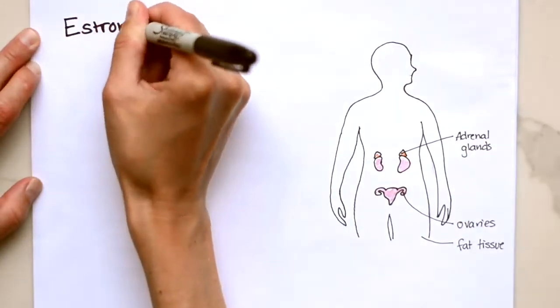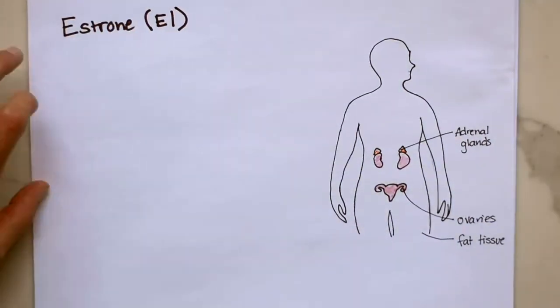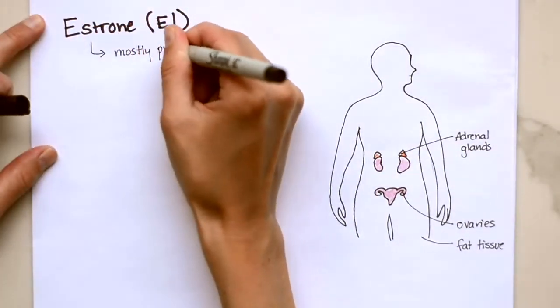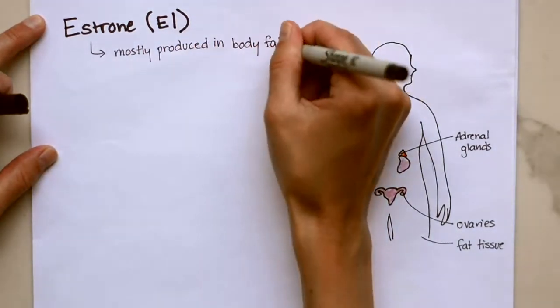Estrone, which is E1. It is considered to be a weak estrogen. It is produced mostly in body fat, but also in the placenta and ovaries.